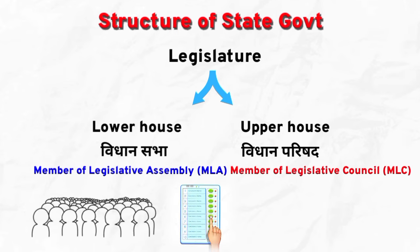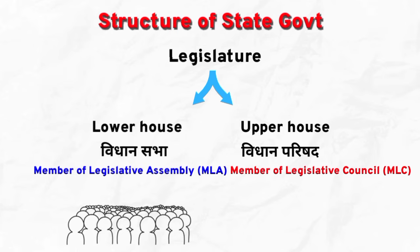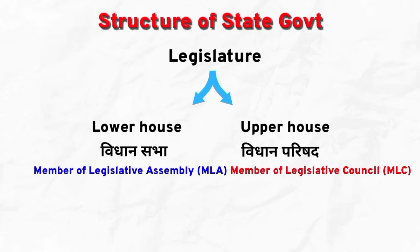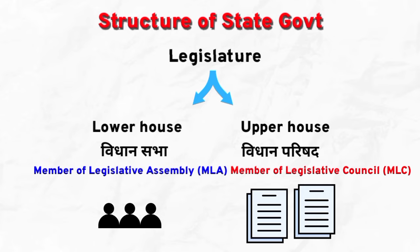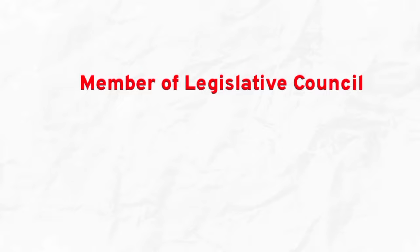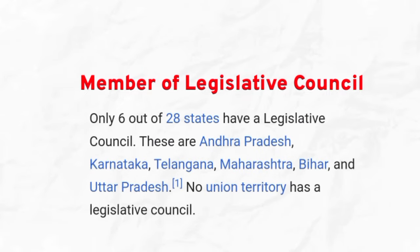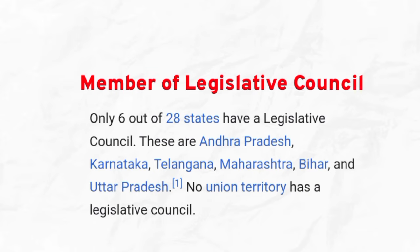The Lower House is a member of the Legislative Assembly and the Upper House is a member of the Legislative Council. MLA is a member of the Legislative Assembly, and MLA is responsible for the Constitution and the State Government Legislature.